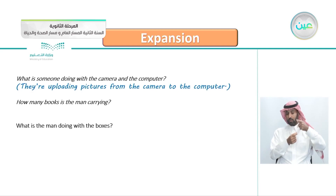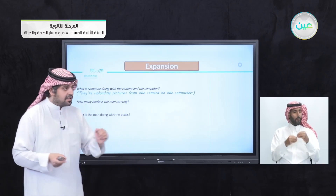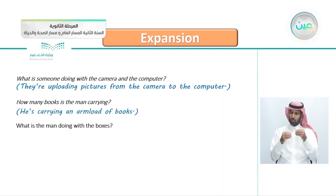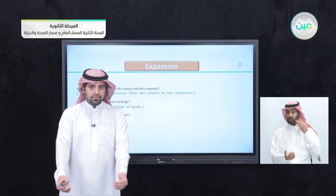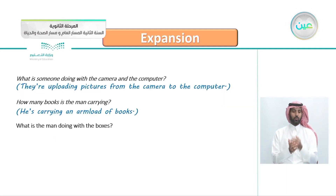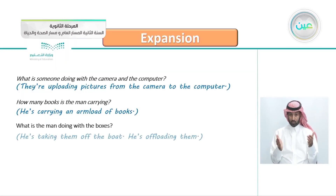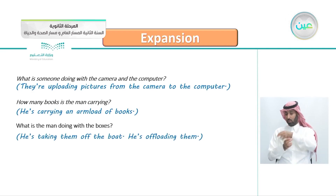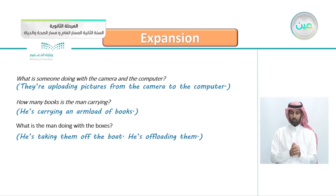How many books is the man carrying? He is carrying an arm load of books. You can see the books are reaching to the top of his arm — this is an arm load of books. What is the man doing with the boxes? He is taking them off the boat, so he is offloading them. He is carrying them from the boat to the shore — he is offloading them.